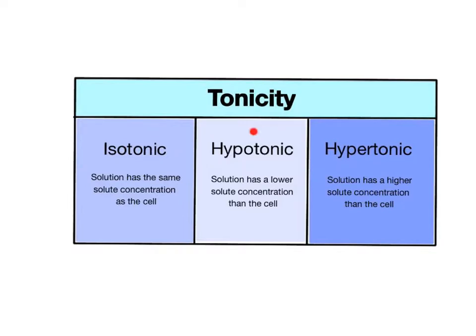Isotonic, hypotonic, and hypertonic. Isotonic is when the cell cytoplasm and its surrounding solution have the same solute concentration. Hypotonic is when the surrounding solution has a lower solute concentration than the cell cytoplasm. Hypertonic is when the surrounding solution has a higher solute concentration than the cell cytoplasm.